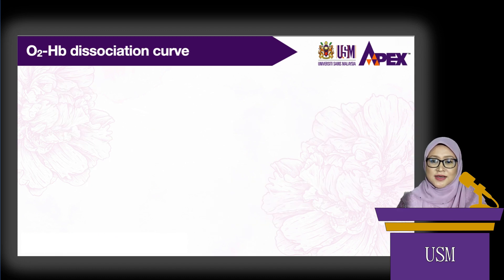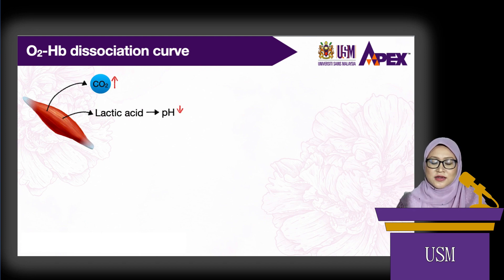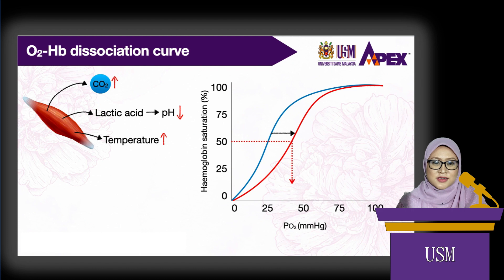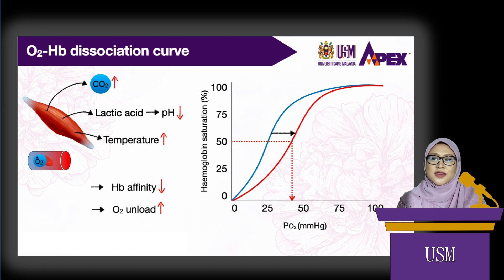The exercising muscles are producing more carbon dioxide and more lactic acid, which reduces the pH and increases temperature. All of this shifts the oxygen-hemoglobin dissociation curve to the right. The P50 increases and hemoglobin affinity for oxygen decreases, making it easier to unload oxygen in the exercising skeletal muscle. The oxygen demand is matched by shifting the oxygen-hemoglobin curve to the right.